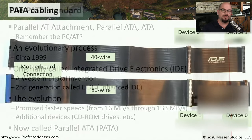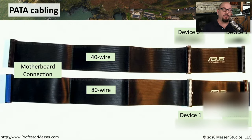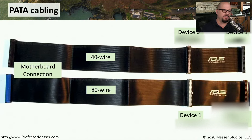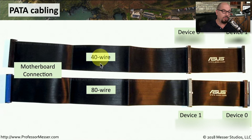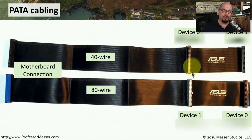Here's the type of cabling you might see if you open up an older computer that has one of these PATA drives inside. You first have the connection to the motherboard, and then this ribbon cable — which is either a 40-wire cable or an 80-wire cable — will connect to the drives on the other side.